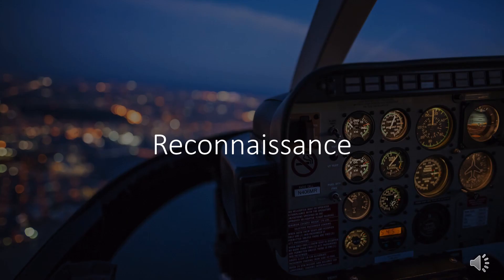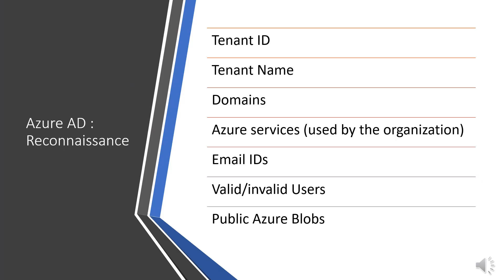During Reconnaissance, you only know the domain name of a company that you will perform the penetration test on — for example, contoso.com. Based on this information, we can obtain useful information such as: Tenant ID, Tenant Name, Domains, Azure Services used by the organization, Email IDs, Valid or Invalid Users, and Public Azure Blobs.